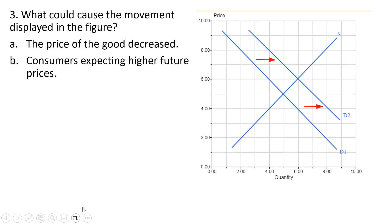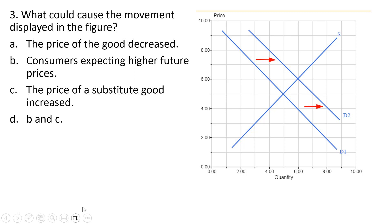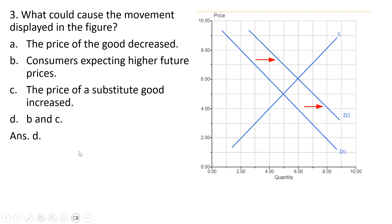What could cause the movement displayed in the figure? Answer choice A is incorrect — if the price of the good decreased, we'd just move along a demand curve. Here we have the entire demand curve shifting right, or the entire relationship between price and quantity demanded changing. Consumers expecting higher future prices would be correct, as consumers may try to beat the price increase by buying more today, so demand shifts right today. The price of a substitute good increased would also be correct. So the answer is D — both B and C are correct.